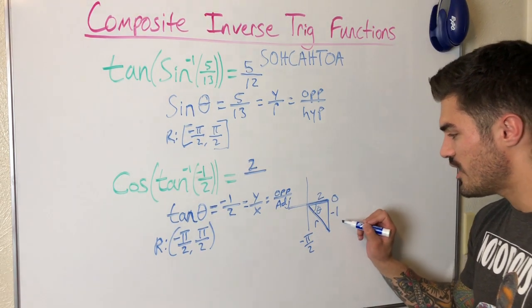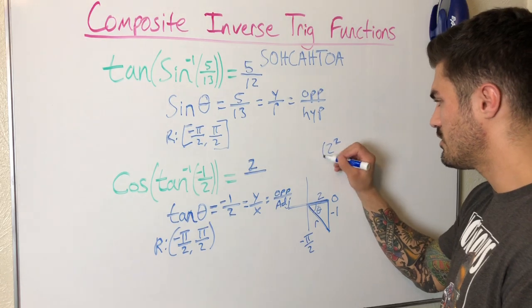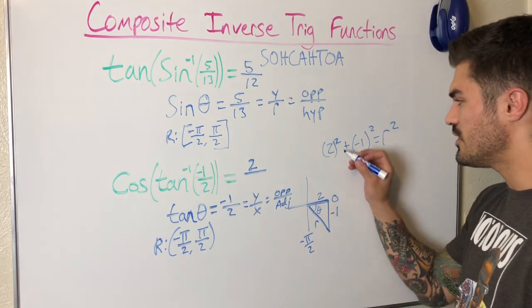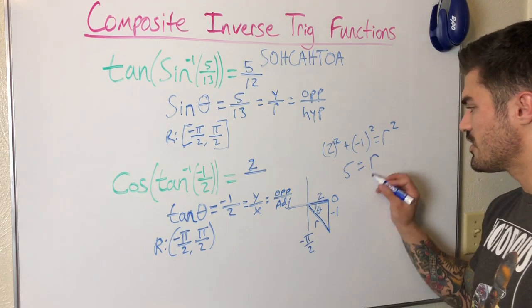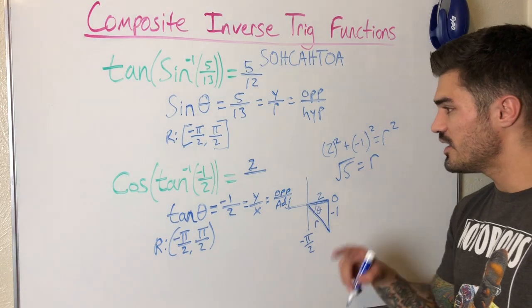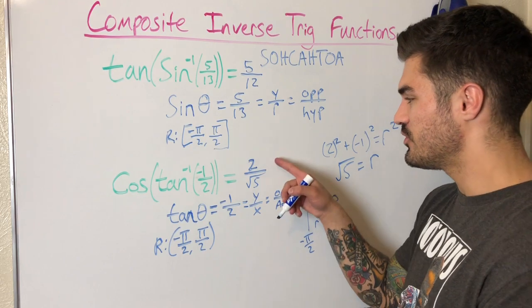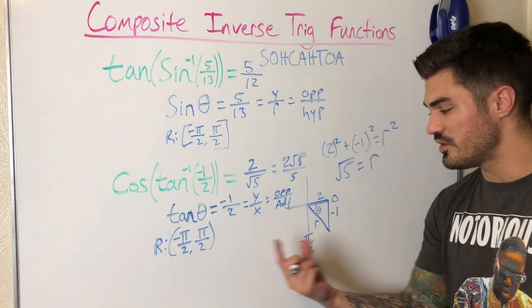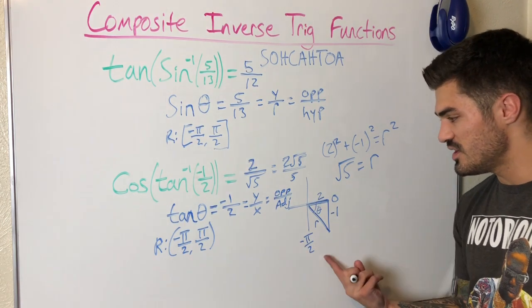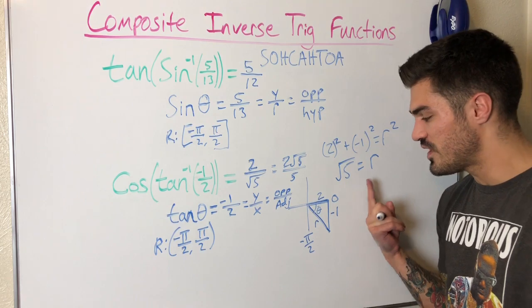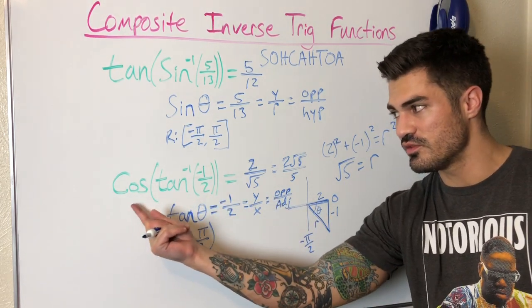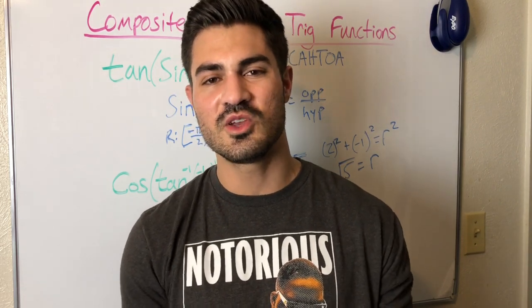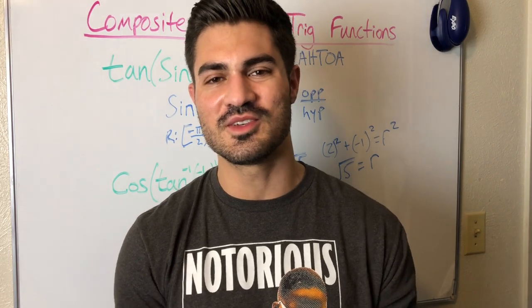Using the Pythagorean theorem: 2² + (-1)² = r². So 4 + 1 = 5, meaning r = √5. Since r is always positive, cosine equals adjacent over hypotenuse = 2/√5. Rationalizing the denominator gives 2√5/5. The process is the same for all of these: draw a triangle, identify the quadrant, draw the known sides, use the Pythagorean theorem for the unknown side, and write your solution using the trig definition. Hopefully this video helped — hit like and subscribe, keep flexing those brain muscles, and I'll see you in the next video.